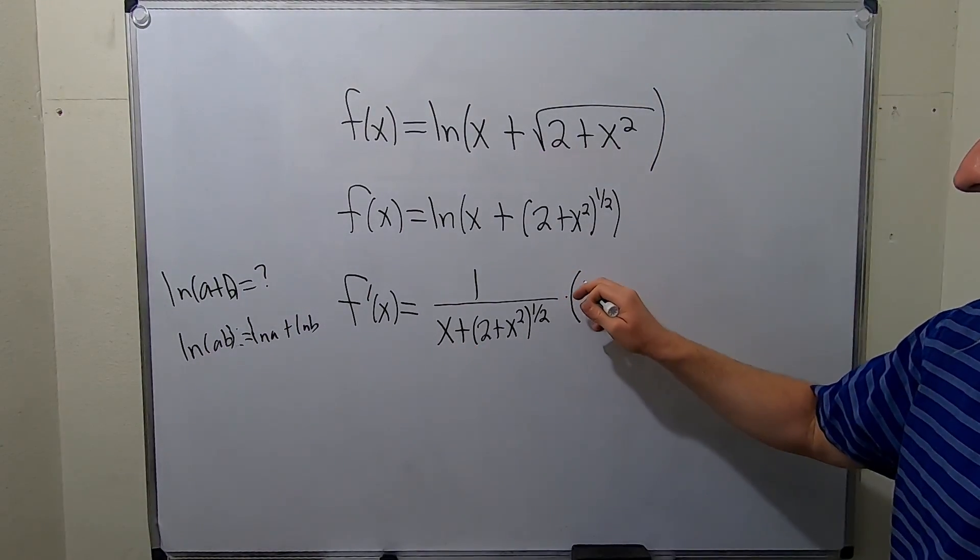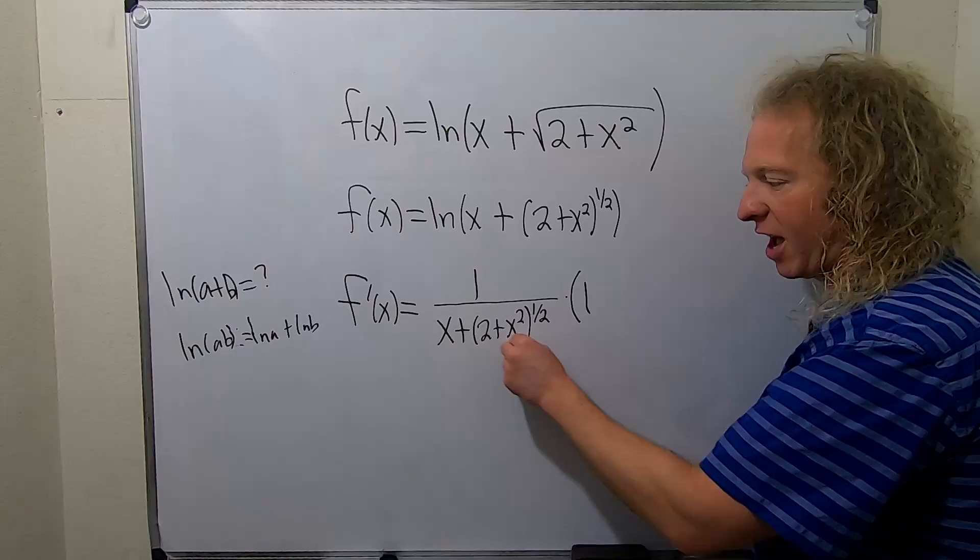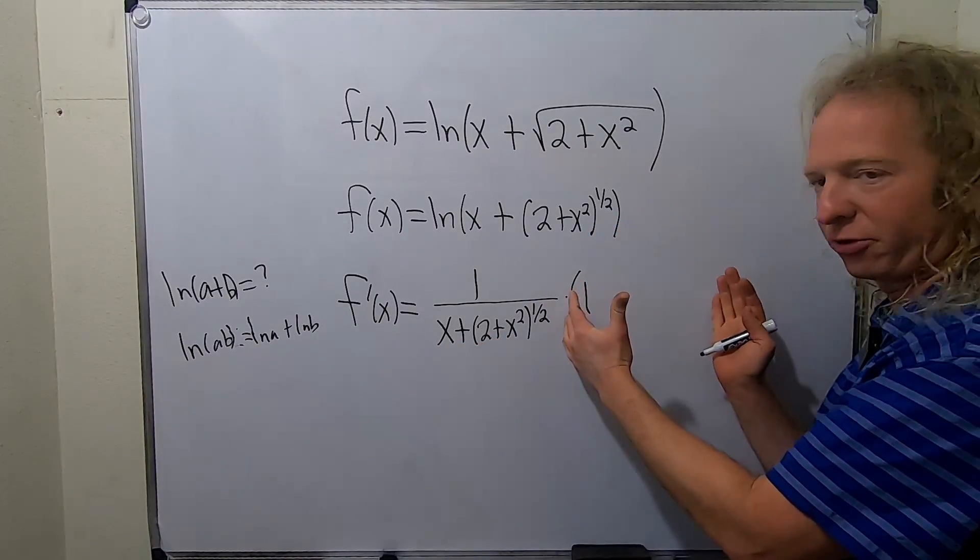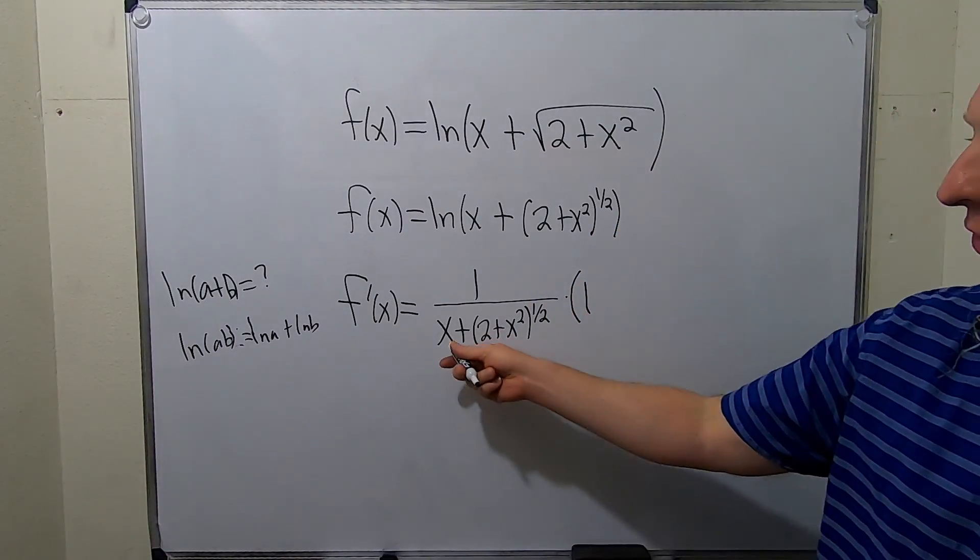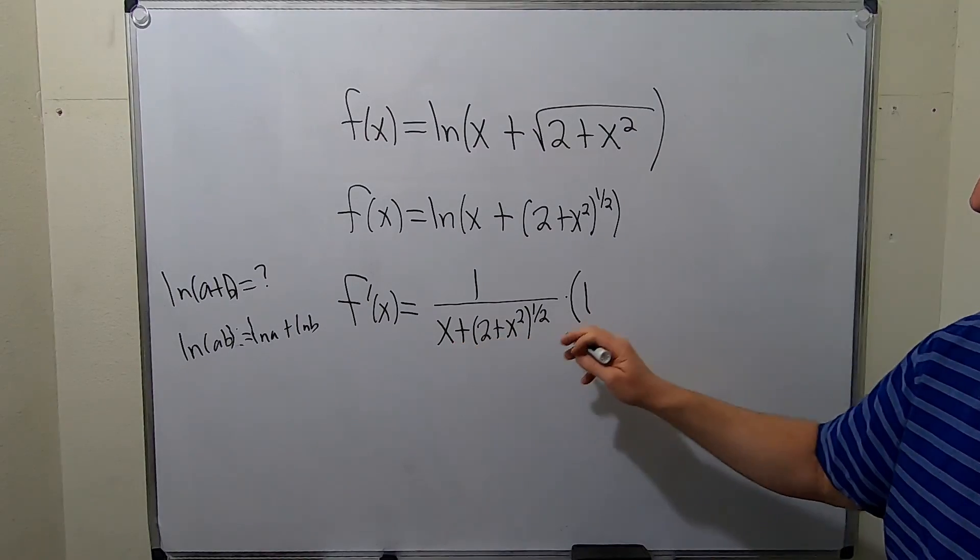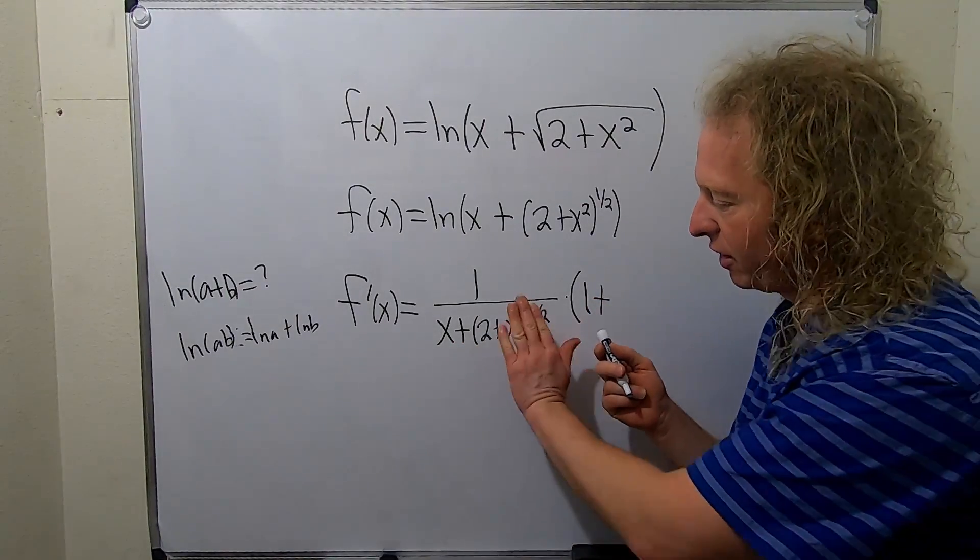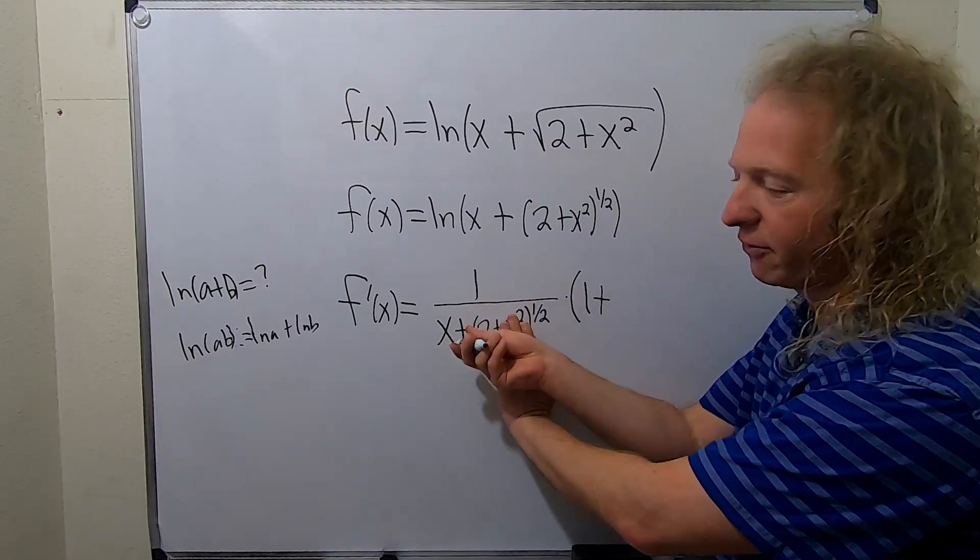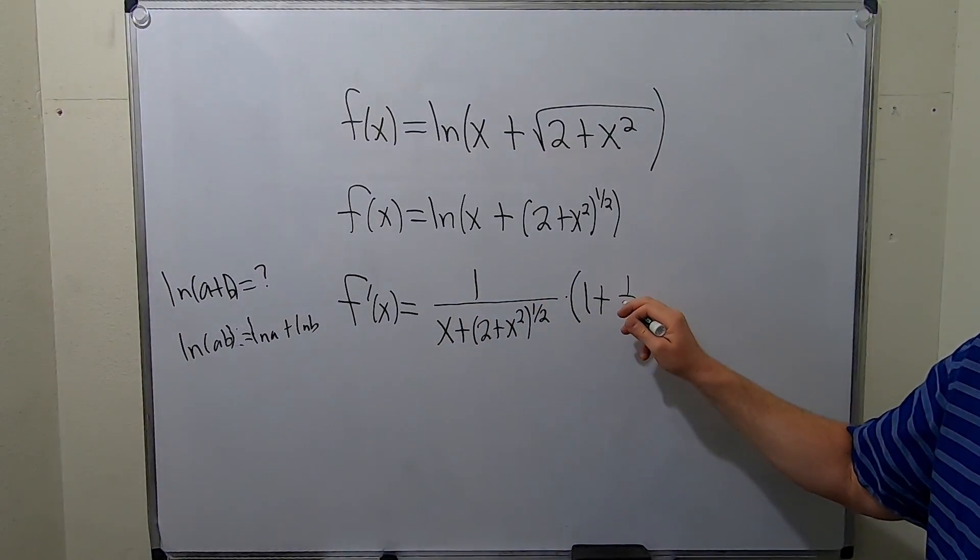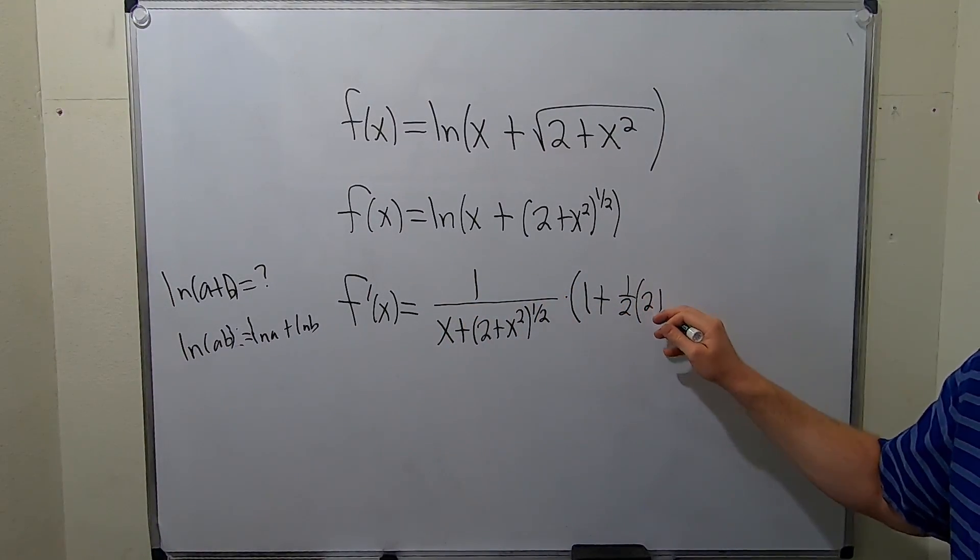Notice I'm putting parentheses. There's 2 terms we have to differentiate, so it's times both terms, so it's really in parentheses. So 1 plus, this derivative requires a chain rule. You have something to a power, so you put the 1 half in the front. So we get 1 half, 2 plus x squared.